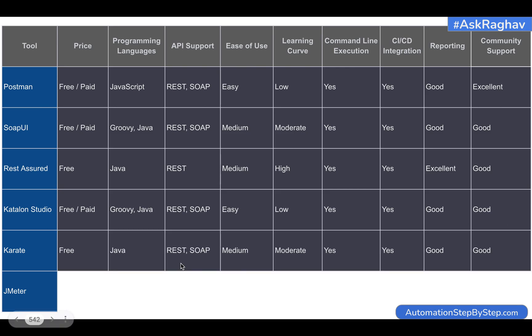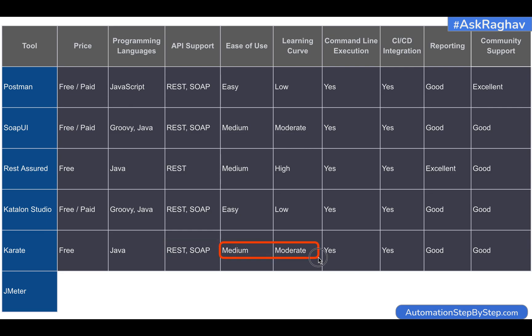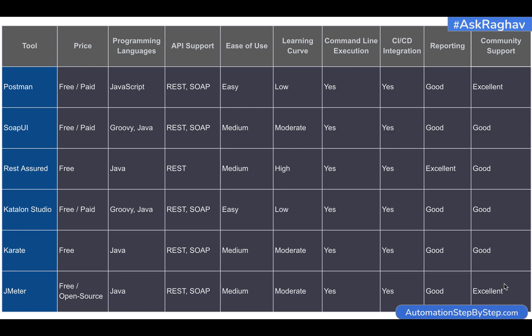When we come to Karate — Karate is again a library that you add to your Java project, and then you can use its functions. It also supports the BDD way of creating tests. It is a free library using Java, and it has options for both REST and SOAP. Ease of use is medium and learning curve is moderate because you add the library and create tests yourself — there is no GUI. All the options for command line and CI/CD integration are present, and reporting library integrations are good. It has good community support as well.